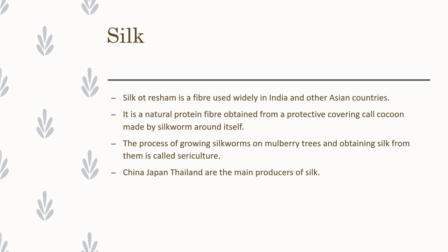Next is silk. Silk, or in Hindi we call it rashim, is a fiber which is widely used in India and other Asian countries. It is obtained from an insect called silkworm, and it is a natural protein fiber. The silkworm creates a protective covering around itself in the form of a cocoon, and from that cocoon, silk is obtained. The process in which silkworms are raised is known as sericulture.